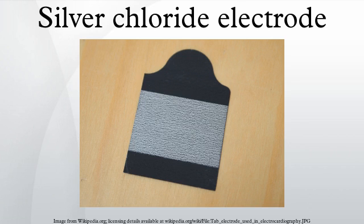A silver chloride electrode is a type of reference electrode, commonly used in electrochemical measurements. For example, it is usually the internal reference electrode in pH meters. As another example, the silver chloride electrode is the most commonly used reference electrode for testing cathodic protection corrosion control systems in seawater environments.